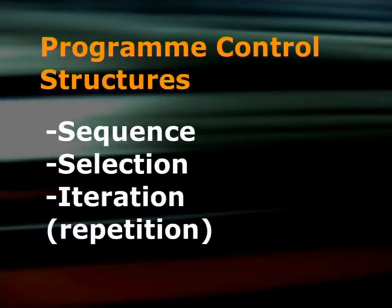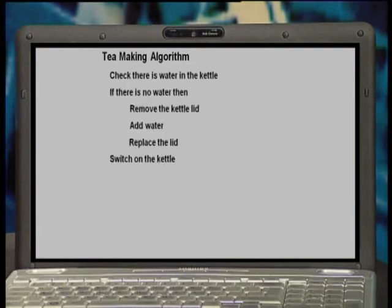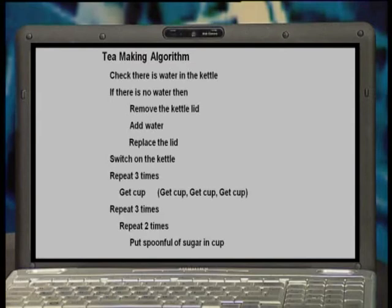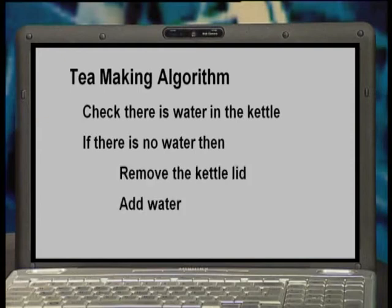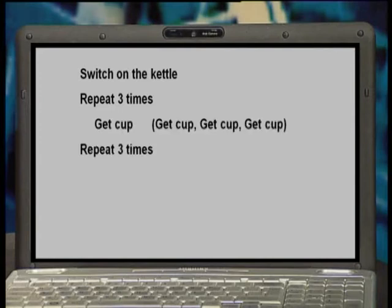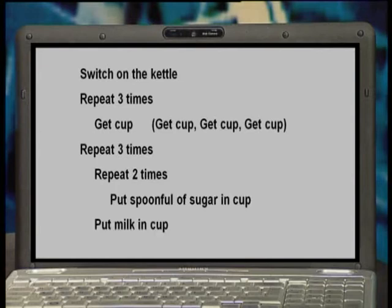These three — sequence, selections, and iteration or repetition — are the program control structures. They control the way a program works. The algorithm runs in sequence from start to finish: first check for water in the kettle, then switch on the kettle. Don't switch on the kettle before you check for water. You can't put in sugar and tea bags before you get the cups. The algorithm can include selection: if there is no water, then the following tasks must be done — remove the kettle lid, add water, and replace the lid. And repetition or iteration — for example, getting three cups. We also repeat twice for each of the three times the action of adding a spoon of sugar to a cup.